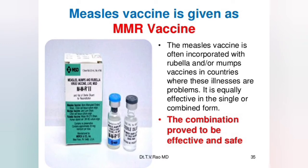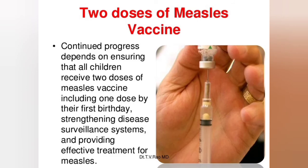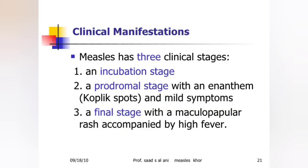The measles vaccine is often incorporated with rubella and/or mumps vaccine in countries where these illnesses are a problem. It is equally effective in single or combined form; the combination has proved to be effective and safe. Continued progress depends on ensuring that all children receive two doses of measles vaccine, including the first dose to be given on the first birthday.